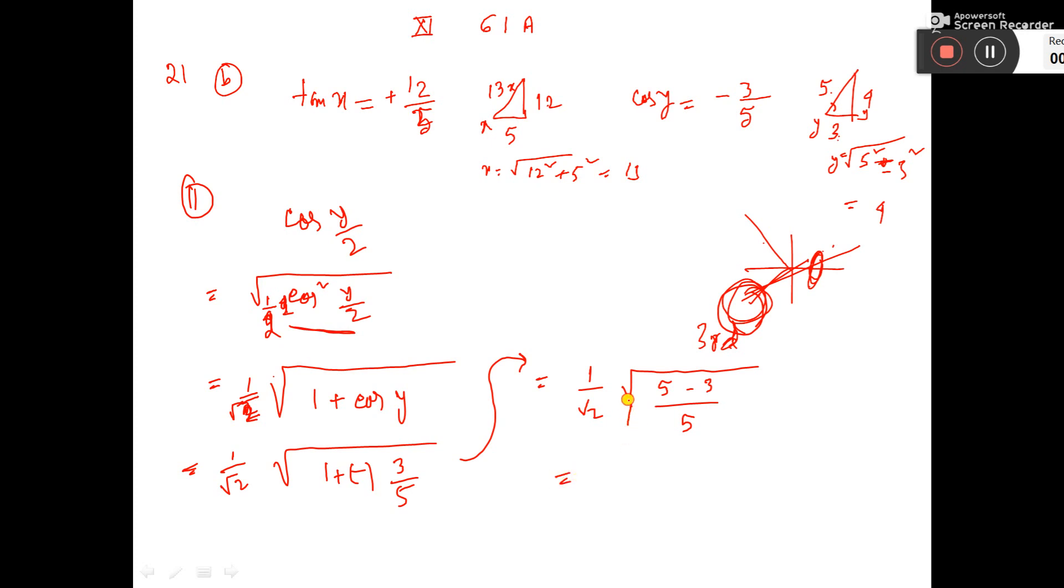So it is coming 1 by root 2, root over 2 by root over 5. I am separating this to cancel. So, 1 by root 5 is the answer.